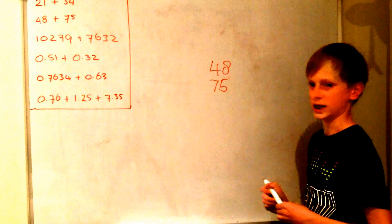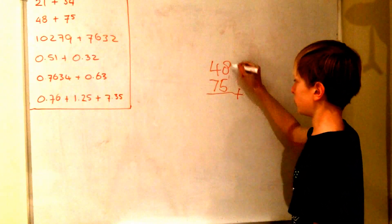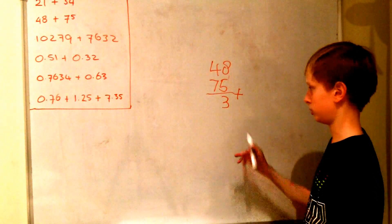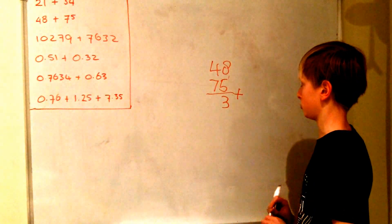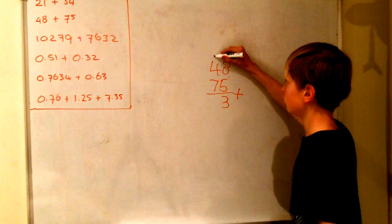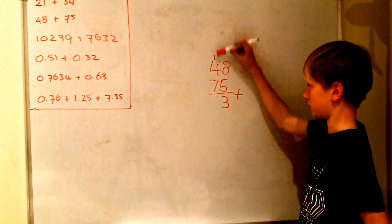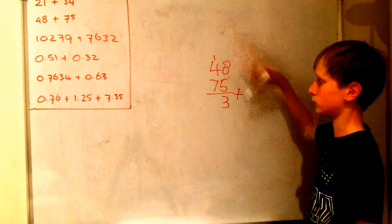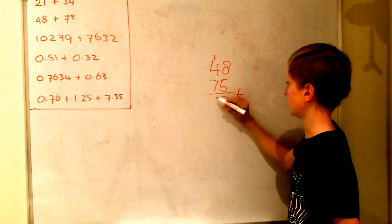So we add 5 to 8. So then we get 13. But we're not going to just write them next to each other because then it's going to cause a different result. So we actually write the 1 up here because it's a 10 and the 10s go up there. So we just add them to those numbers. So 1 plus 4 is 5. Plus 7 is 12.